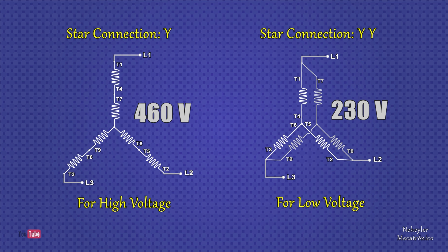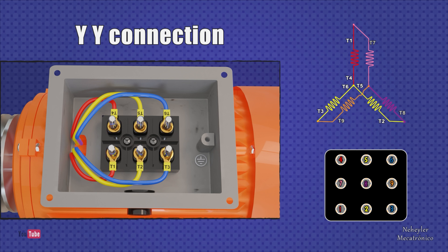Now, let's see how to make the parallel star connection, or double Y, which is used when you have the lowest voltage. The cables or terminals 1, 2, 3, 4, 5, and 6 do not change position. They remain as shown previously.